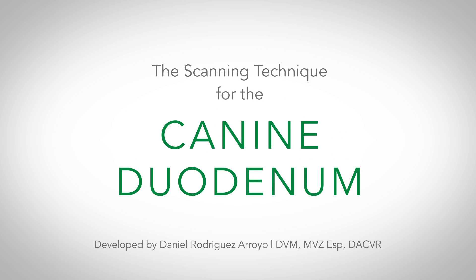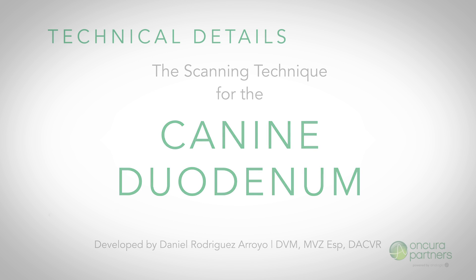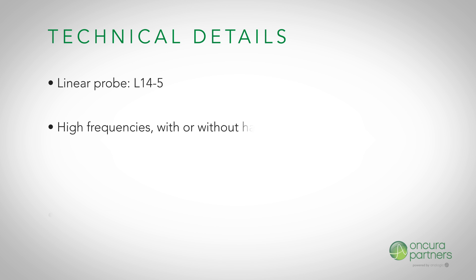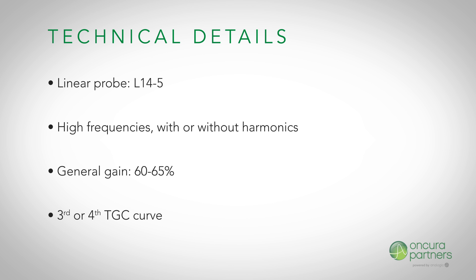The scanning technique for the duodenum in lateral recumbent canine patients. For this ultrasound, a linear transducer will be used at high frequencies with or without harmonics. The general gain should be maintained at approximately 60 to 65 percent, and the third or fourth TGC curve should be selected from the drop-down menu.